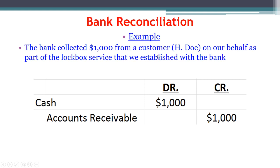Finally, for the lockbox situation, we debit cash to increase it by $1,000. Since the customer owed us money, they had an accounts receivable balance. Now we credit accounts receivable to reduce it by $1,000 since they no longer owe us the money. That is the last adjusting entry in this section, and it's a good lead-in to the next module on accounts receivable and bad debt expense.